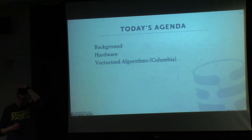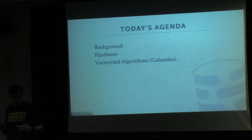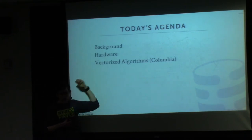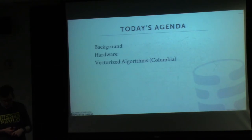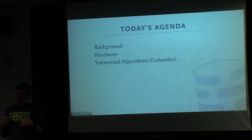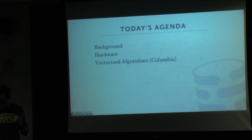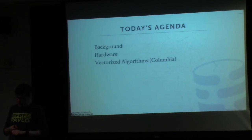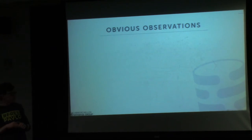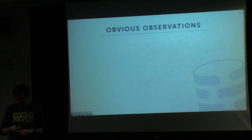For today, we'll start with the background of vectorization—what it means to have vectorized operators or execution models inside a database system. As we go along, we'll talk about what the hardware looks like, which is relevant to the evaluation at the end of the paper you read. Then I'll cover a subset of the algorithms from the Columbia paper.